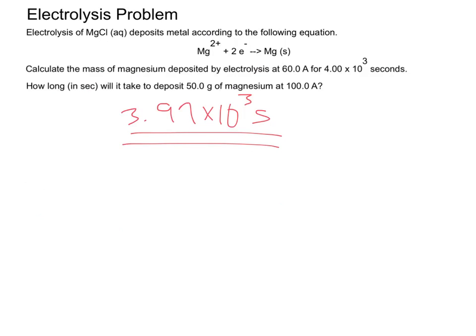In these electrolysis cells, they're essentially non-spontaneous reactions that you're forcing to happen by using an external battery, an external power source, somehow. So electrolysis cells are theoretically the opposite of a voltaic or galvanic cell.